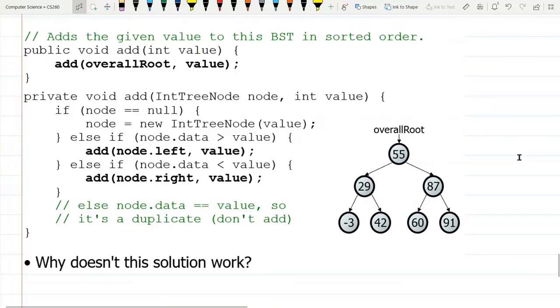What we're looking at here is a bad solution, well it's not really a solution because it doesn't work, for add. So if you look, we've got the public-private pairs. There's the public add that just takes the integer value, and then here's the private add that takes, of course, the value, but also the current node that we're looking at.